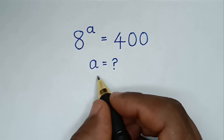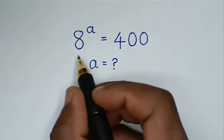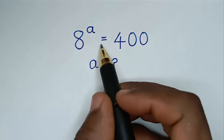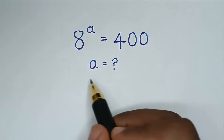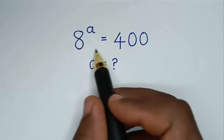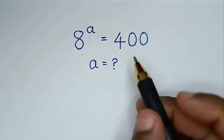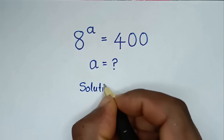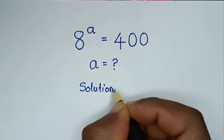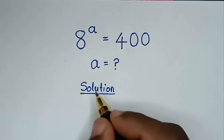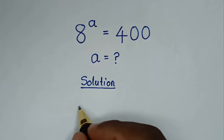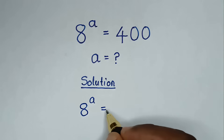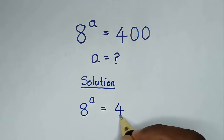Hello, you are welcome to solve this math problem which is 8 power a is equal to 400, to find the value of a from this equation. Solution. From this problem here, which is 8 power a is equal to 400.